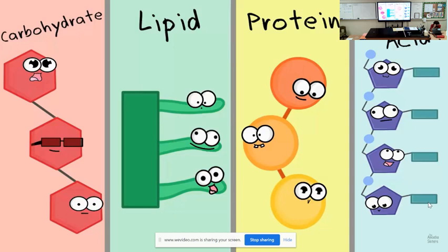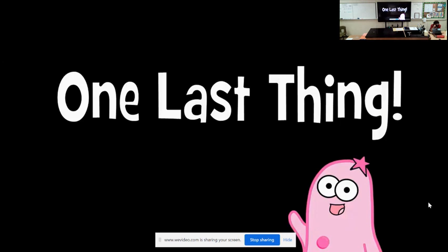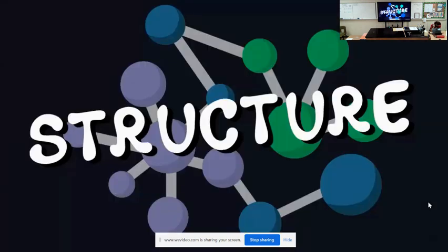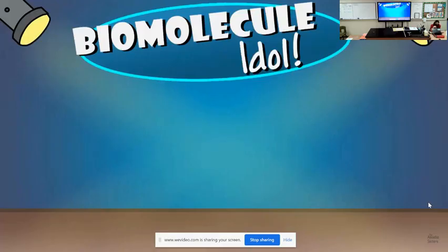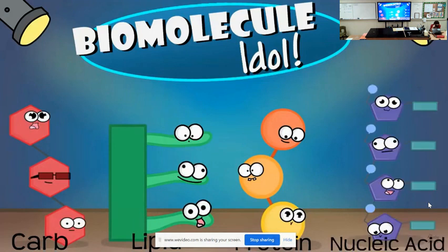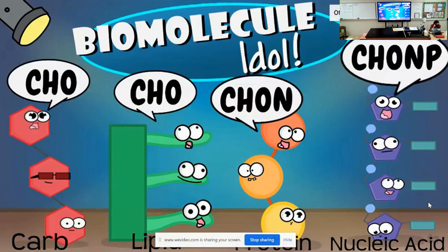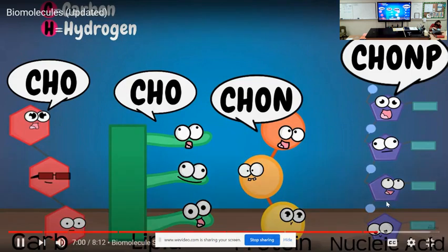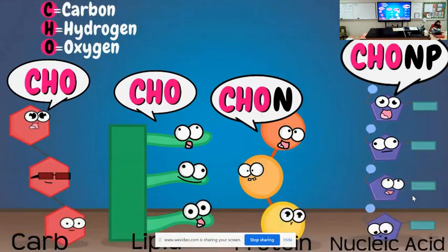So we just powered through introducing the four biomolecules by providing examples, exploring their monomers, and giving some general functions. One last very important part is the structure of these biomolecules — understanding the structure can help with predicting their properties. Write the four biomolecules in this order: carbs, lipids, proteins, and nucleic acids. There is a mnemonic device that goes with these four biomolecules: CHO-CHO-CHOMP-CHOMP. The C stands for carbon, the H stands for hydrogen, the O for oxygen. So carbs, lipids, proteins, and nucleic acids all have CHO in them.